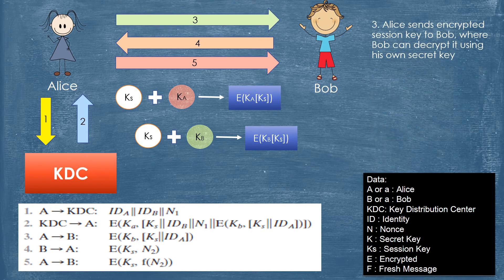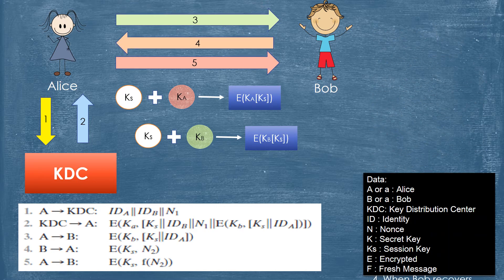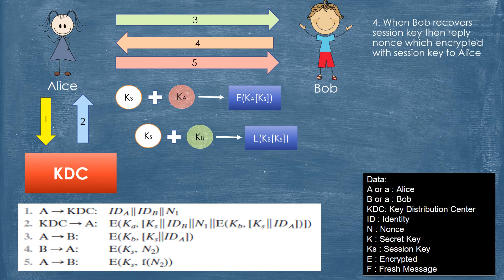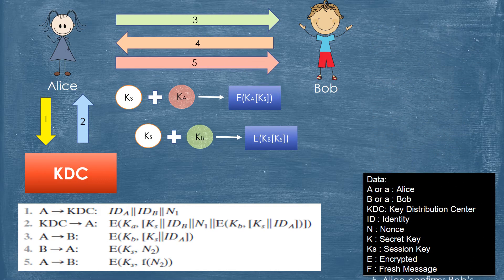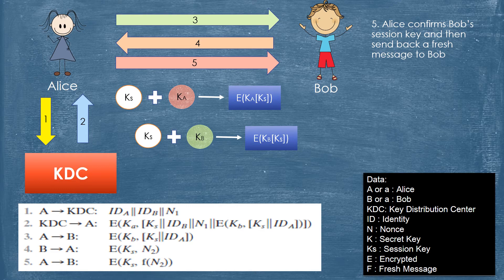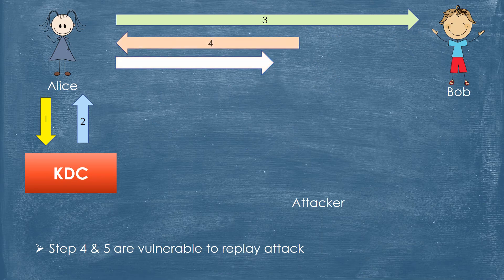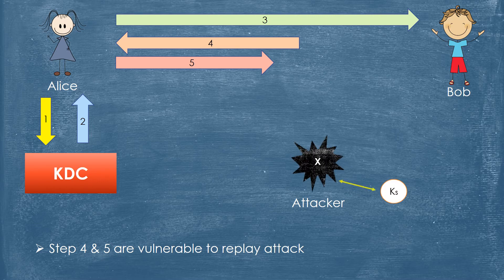Step 3: Alice sends the encrypted session key to Bob, where Bob can decrypt it using his own secret key. Step 4: When Bob recovers the session key, he replies with a nonce encrypted with the session key to Alice. Step 5: Alice confirms Bob's session key and then sends back a fresh message to Bob. Steps 4 and 5 are vulnerable to replay attack.